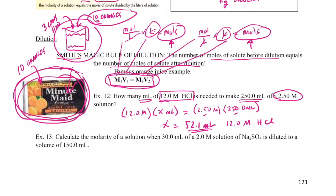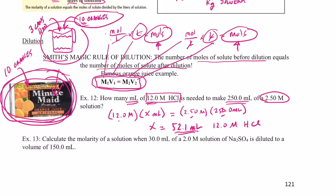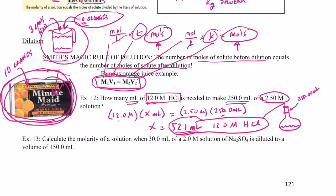To make this solution, I'd use a volumetric flask — they have long necks and hold a specific volume, with a line marking exactly 250.00 mL. I'd add some water first, then slowly add 52.1 mL of 12 molar HCl, because adding acid to water is an exothermic solvation process and can get hot. Then I'd add water up to the mark to complete the dilution — the moles of acid remain the same before and after.